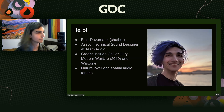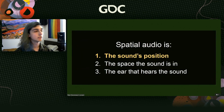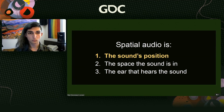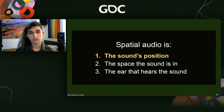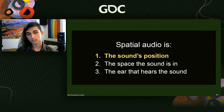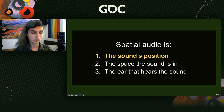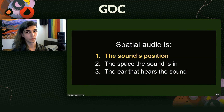So what is spatial audio? We can break that up into three main categories: the sound's position, the space the sound is in, and the ear that hears the sound. We're going to go through each of these categories one by one, starting with the sound's position.